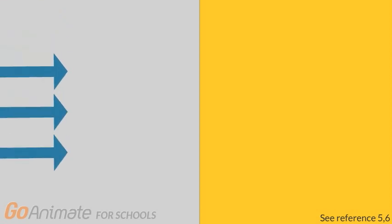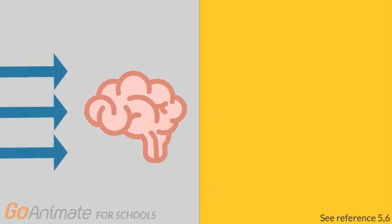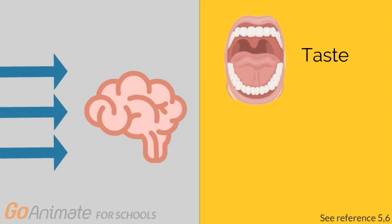After you eat something, the taste cells send signals to the brain and the brain will process the taste. Taste and smell are combined to produce different flavors.